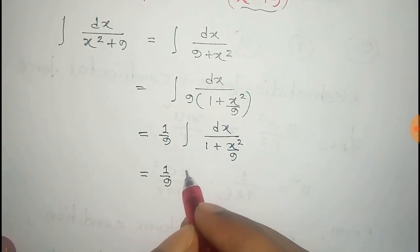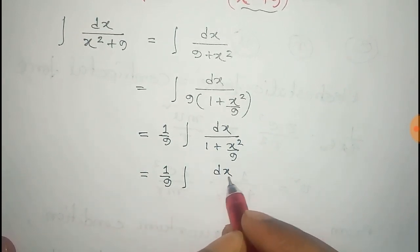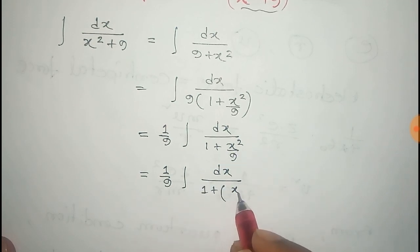So that equals 1 by 9 integral dx by 1 plus, we can write this term as x by 3 whole square.